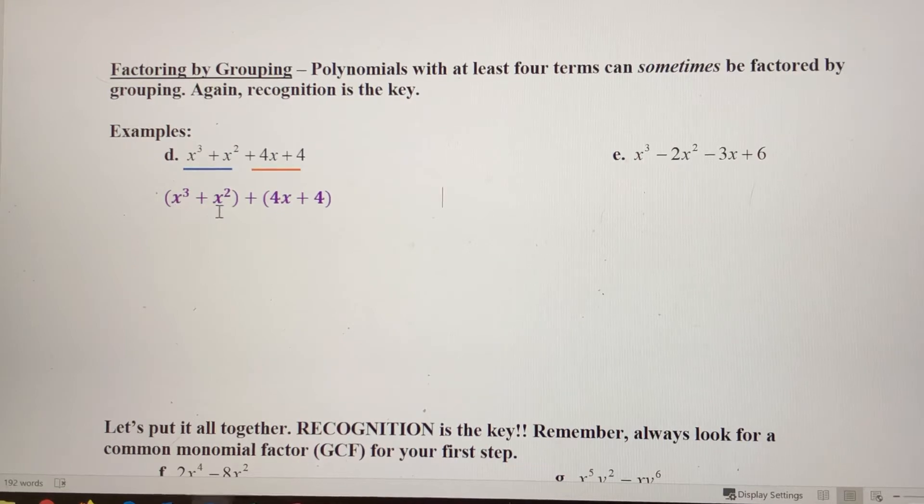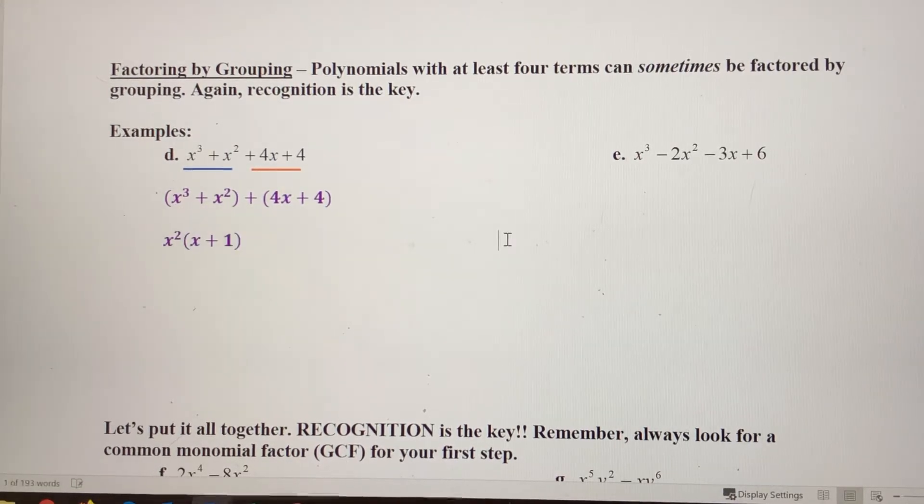If you look at x cubed and x squared, they have an x squared in common. And if I take an x squared out of that, x cubed divided by x squared is x, x squared divided by itself is obviously one.